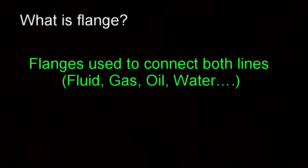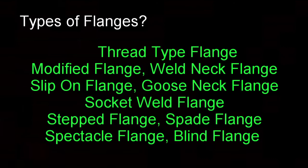What is a flange? A flange is used to connect both lines for fluid, gas, oil, and water. Types of flanges: thread type flange, modified flange, weld neck flange, slip-on flange, gooseneck flange, Saka 12 flange, stepped flange, spade flange, spectacle flange, and blind flange.